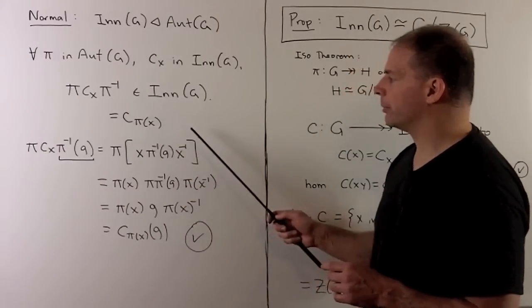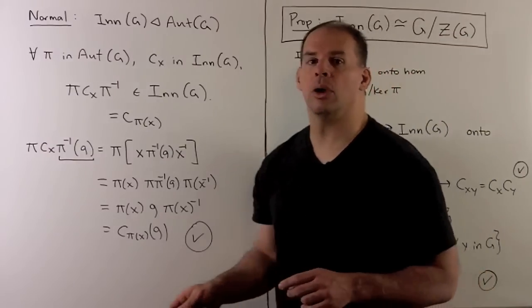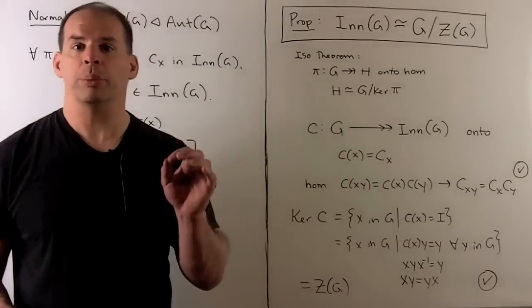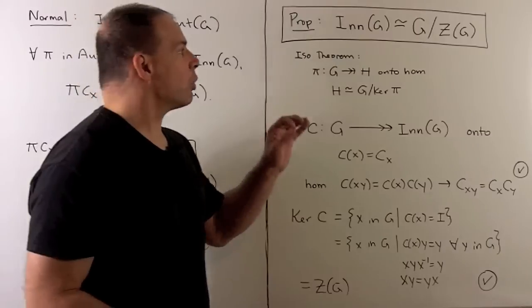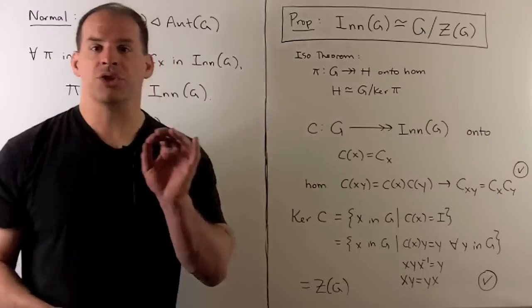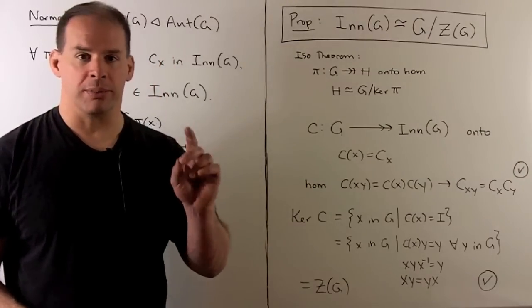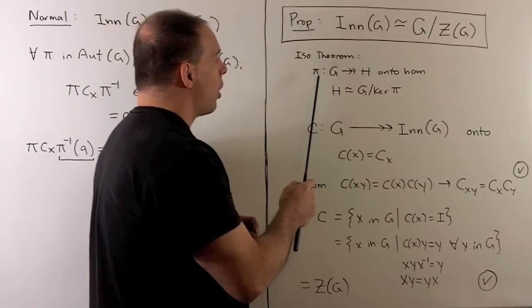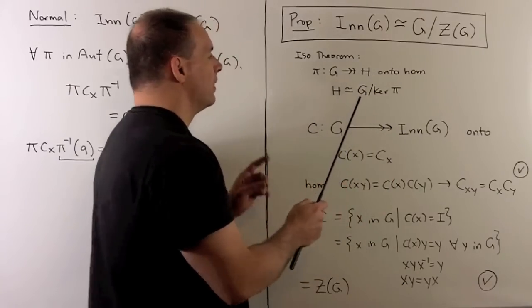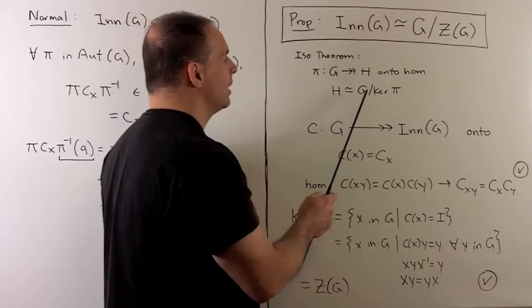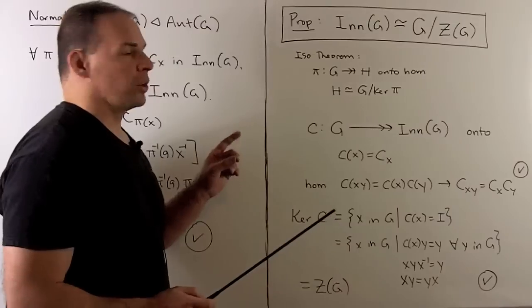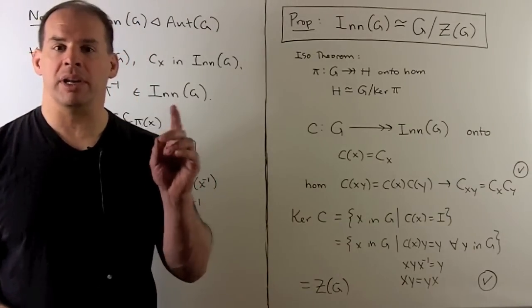One more general result for Inn(G): as a group, Inn(G) is isomorphic to G modulo the center of G. This follows from the first isomorphism theorem — if we have an onto homomorphism from G to H, then H is isomorphic to G mod the kernel.